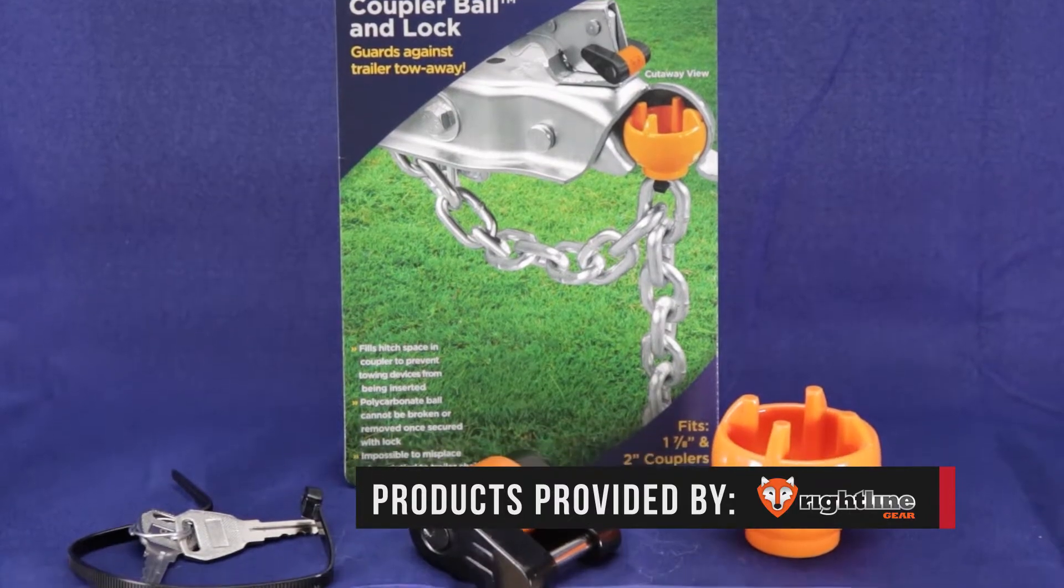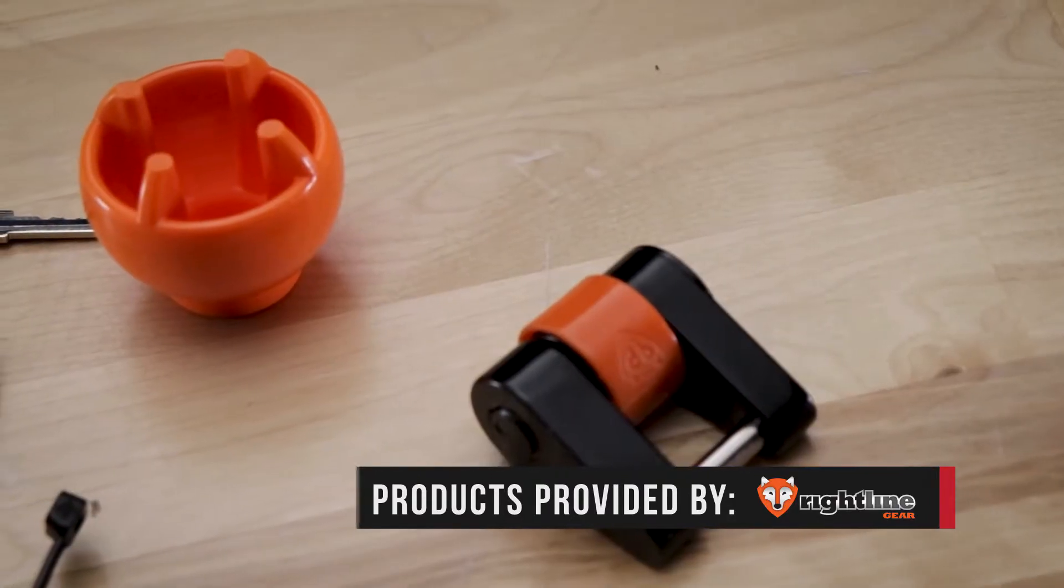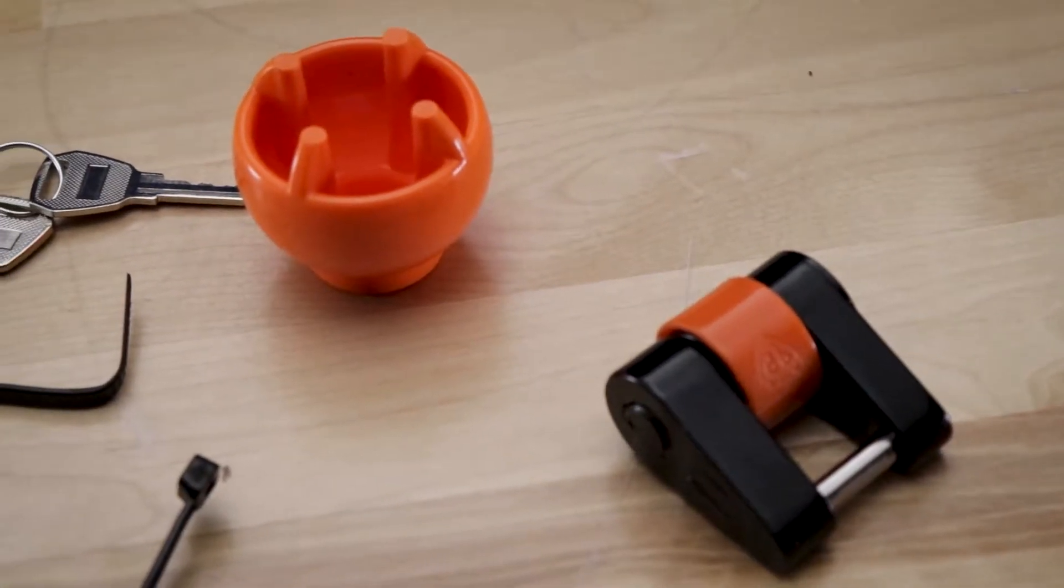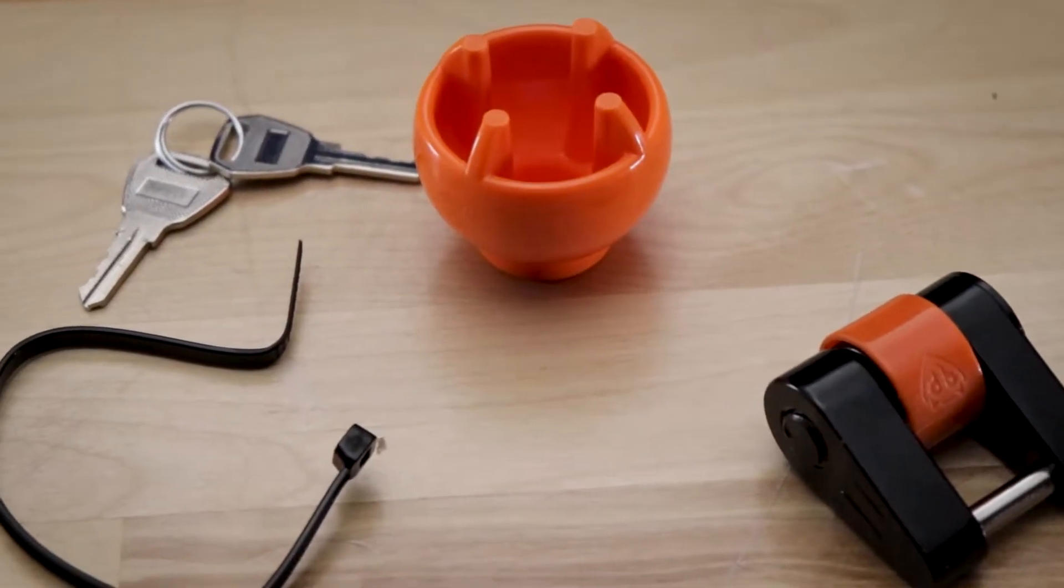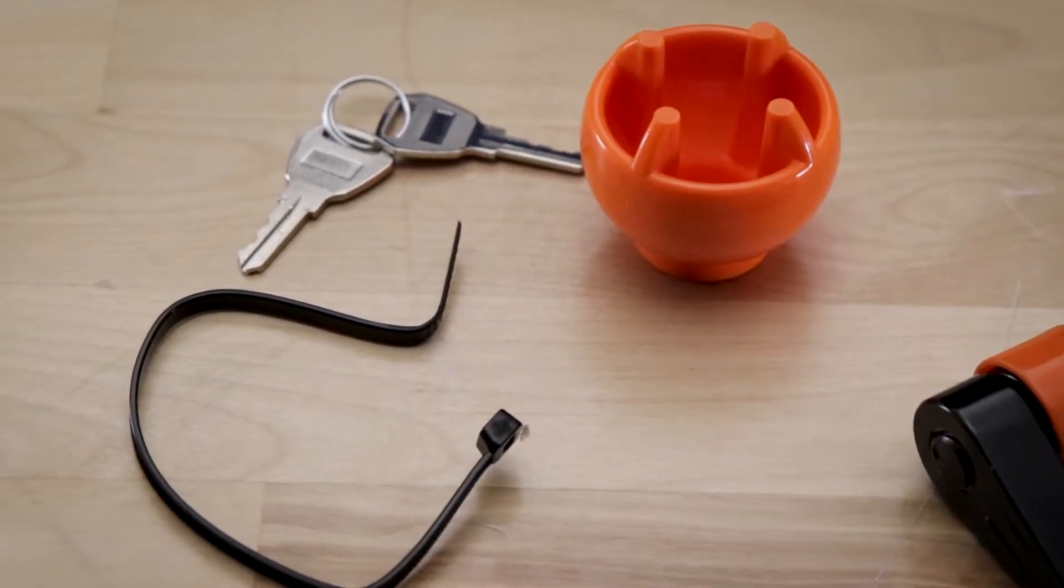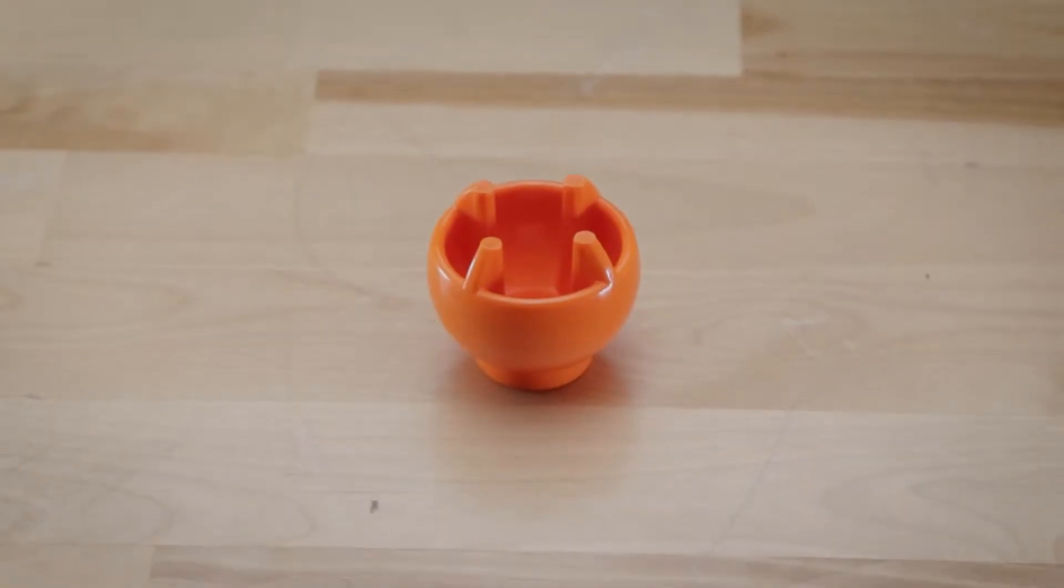This innovative anti-theft coupler ball and lock guards against trailer tow-aways so you can worry less about someone stealing your trailer when you're not towing. It fills the space where the hitch ball or smaller towing devices are inserted.